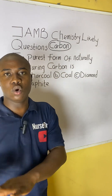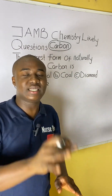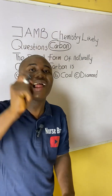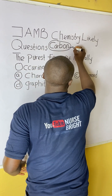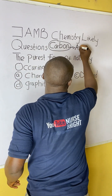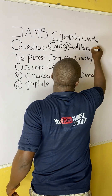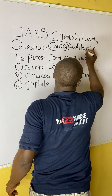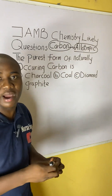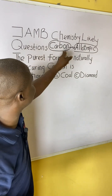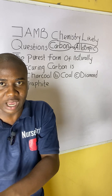It must be noted here that carbon as an element exists in different allotropic forms. So, this must be noted. I just pronounced a term in this question, so it is important for me to explain what this means. Carbon as an element exists in different allotropic forms.